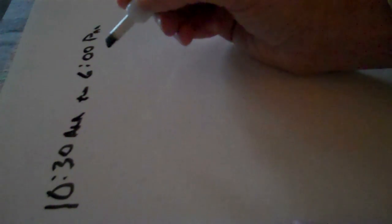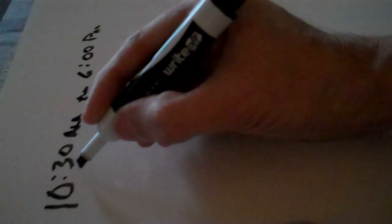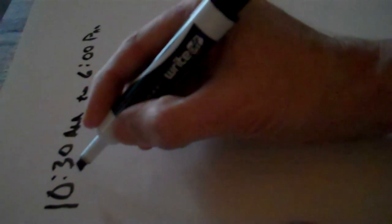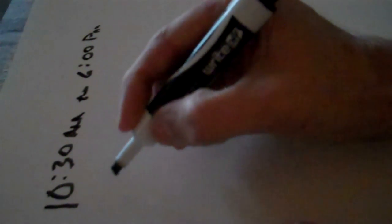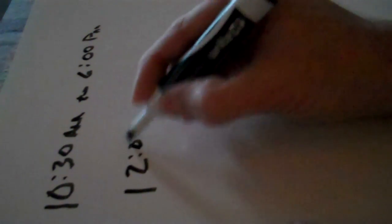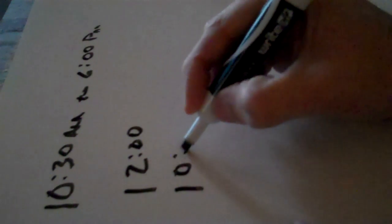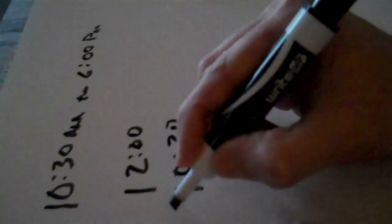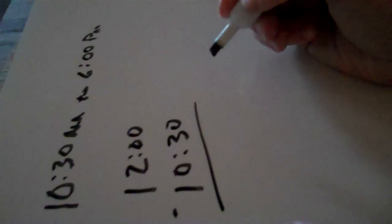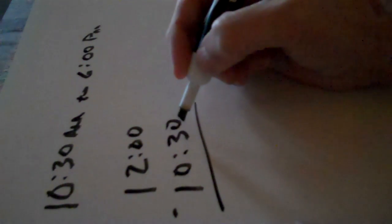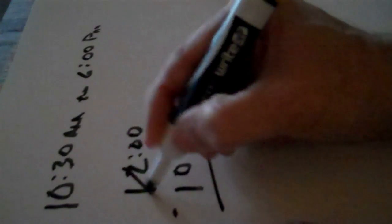The easiest way that I have found is to figure out what the difference would be to get from 10:30 AM to 12 o'clock. In this case, we'll say it's 12 o'clock PM. So if I subtract 10:30 from 12, I can't take 30 minutes from zero minutes, so I have to borrow.